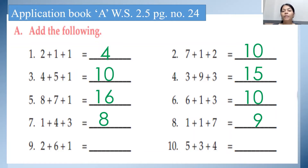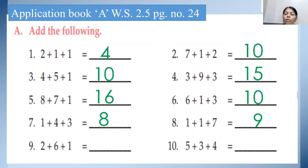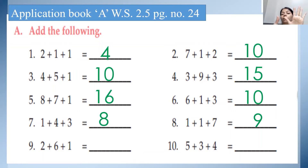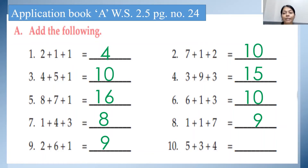See the ninth one: 2 plus 6 plus 1. Same way — 2 in the mind, 6 on the finger, or you can keep 6 in the mind and 2 on the finger. We will do 2 in the mind and 6 on the finger. Count after 2: 3, 4, 5, 6, 7, 8. Then 8 in the mind, 1 on the finger. After 8: 9. So 2 plus 6 plus 1, the answer is 9.